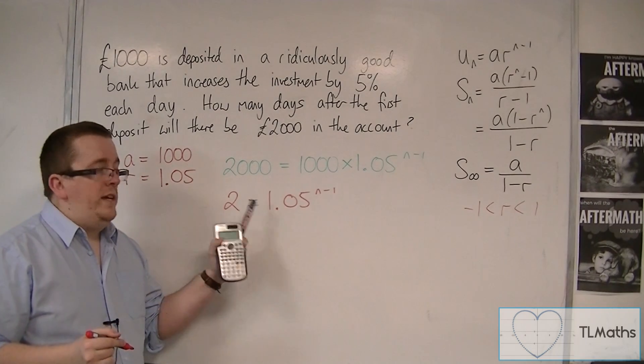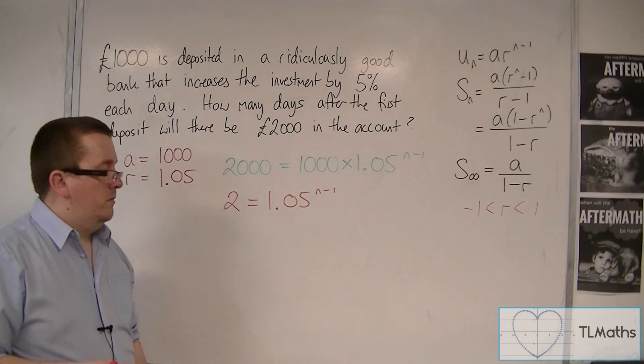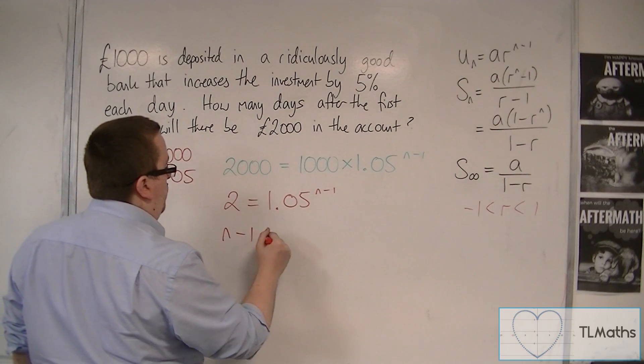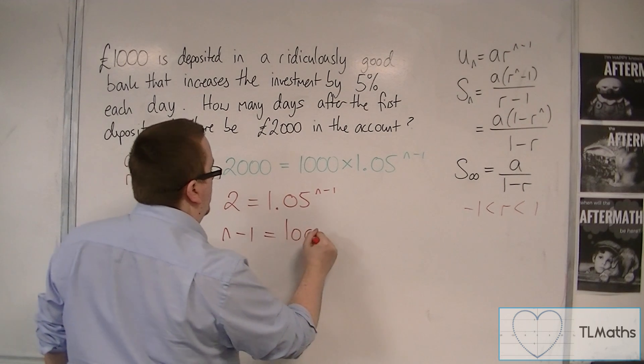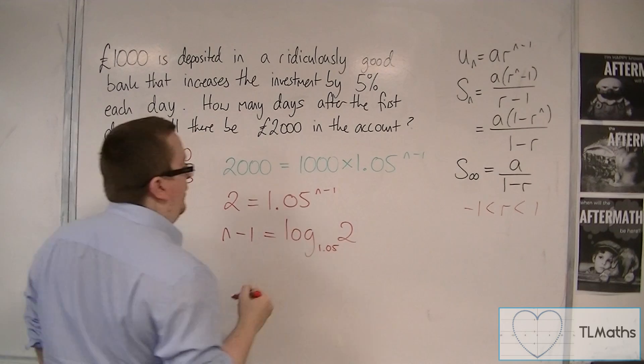Now here we can go from exponential to logarithmic notation, so that means that N minus 1 is equal to log base 1.05 of 2.